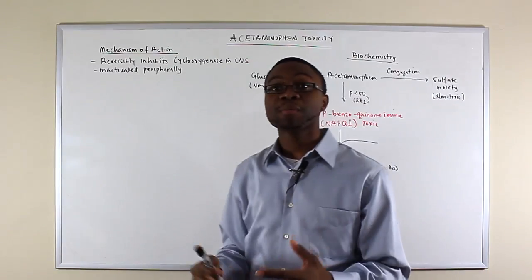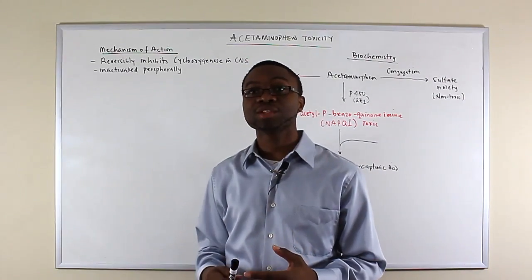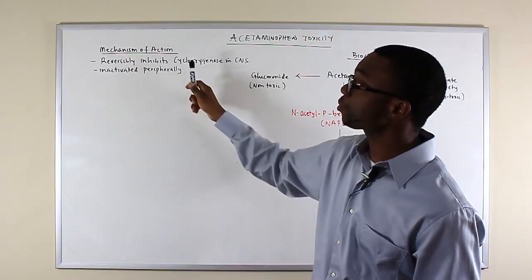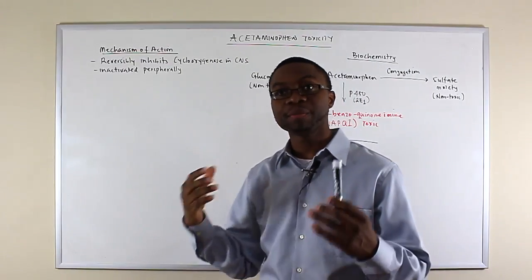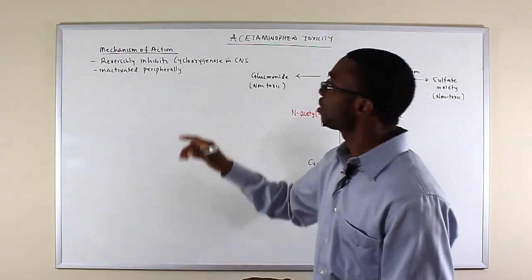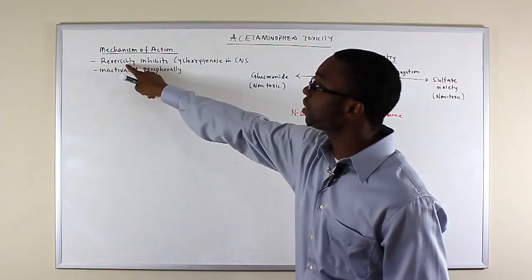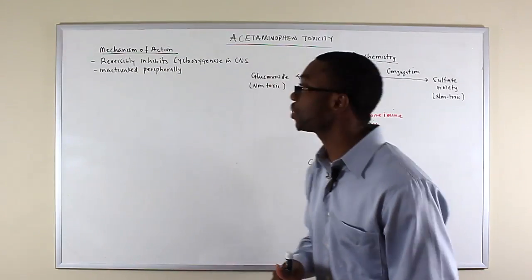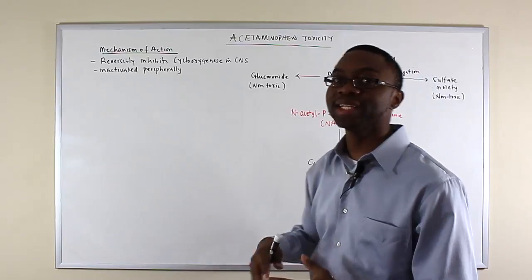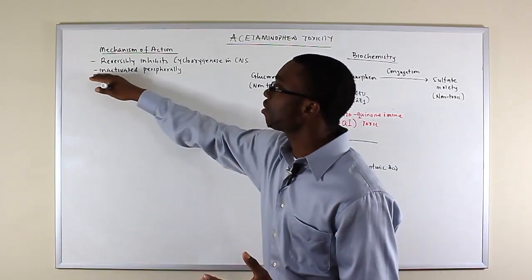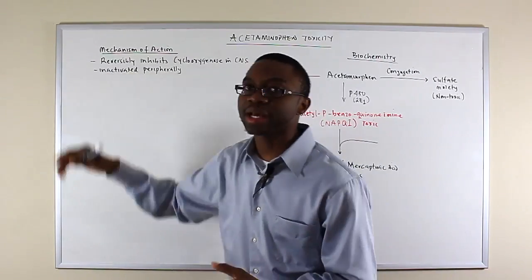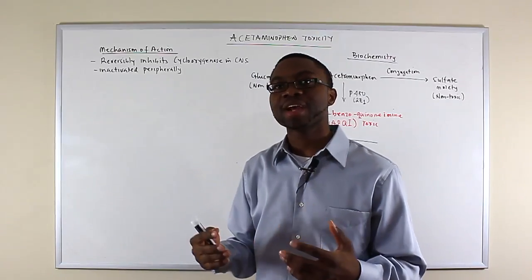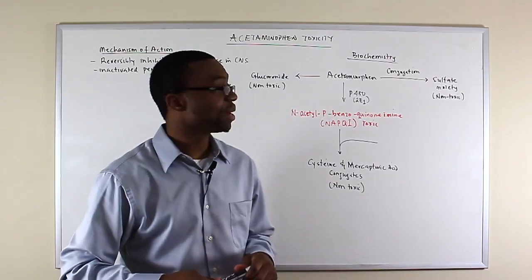Cyclooxygenase actually forms prostaglandins and thromboxane A2, and these prostaglandins are stimulating pain in the body. If you reversibly inhibit the cyclooxygenase pathway and the arachidonic acid pathway in the brain, the patient does not feel pain. Although it doesn't work peripherally like other NSAIDs, it prevents the perception of pain by the patient.